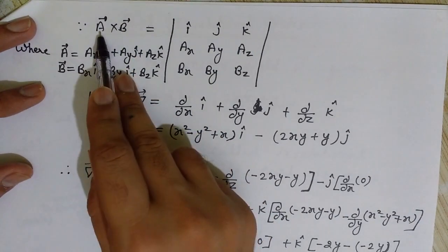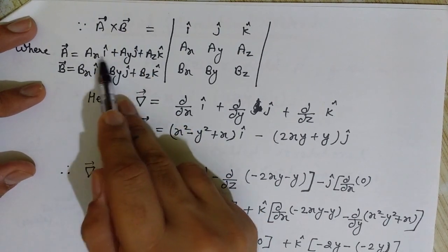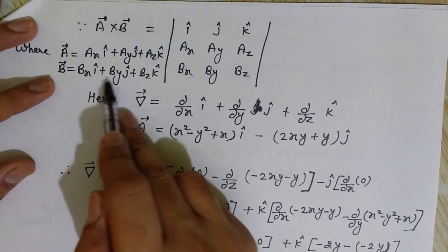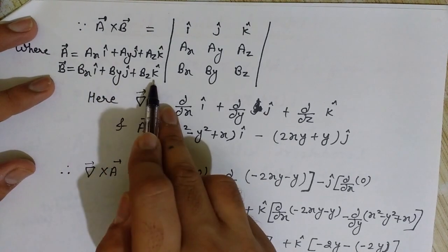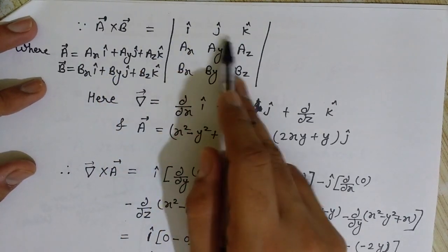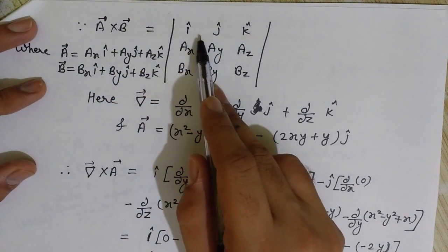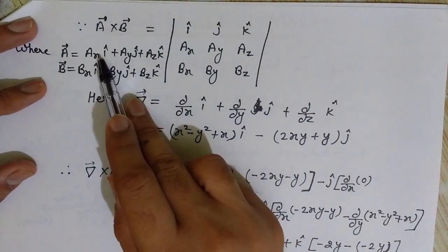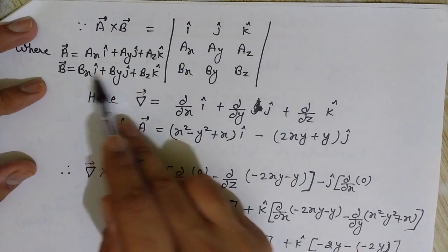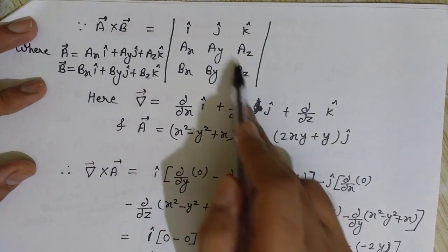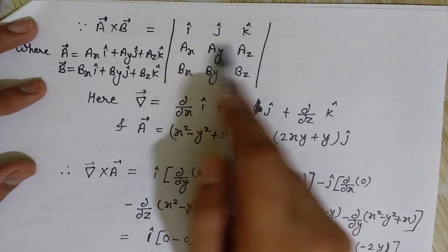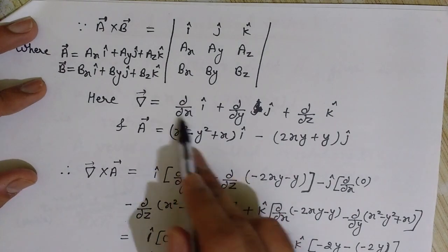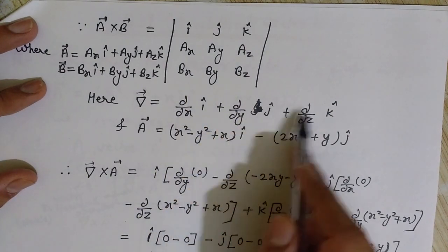To find the cross product of two vectors, if we have vectors A and B where A = Ax î + Ay ĵ + Az k̂ and B = Bx î + By ĵ + Bz k̂, then the cross product is written as a 3×3 determinant with î, ĵ, k̂ in the first row, the components of the first vector in the second row, and the components of the second vector in the third row.